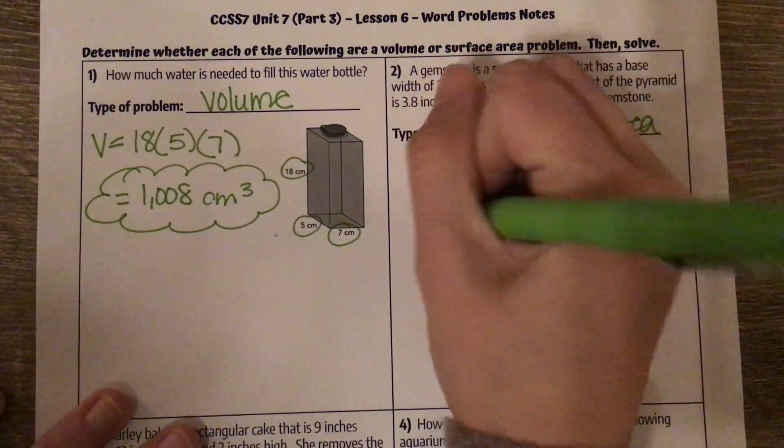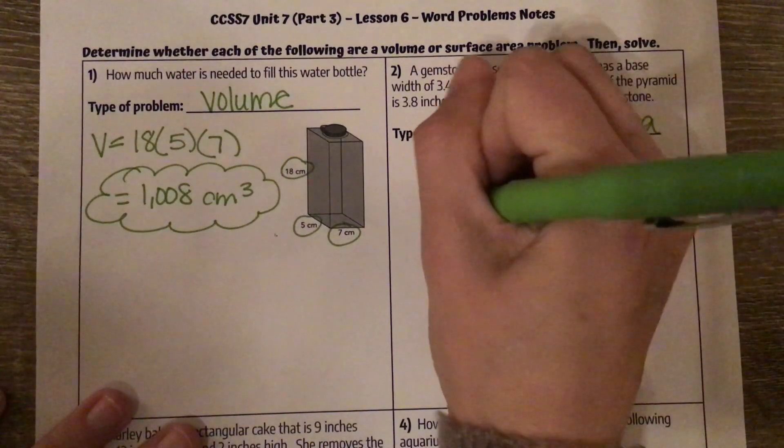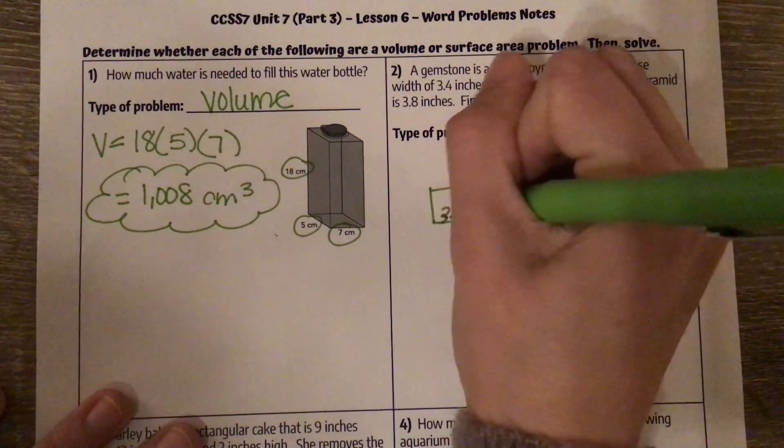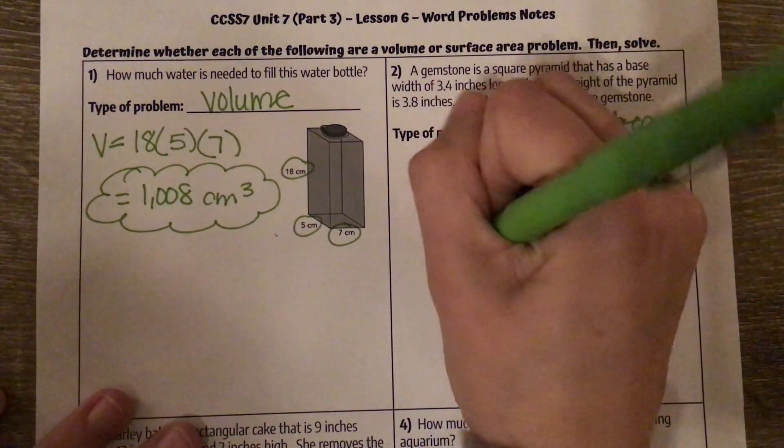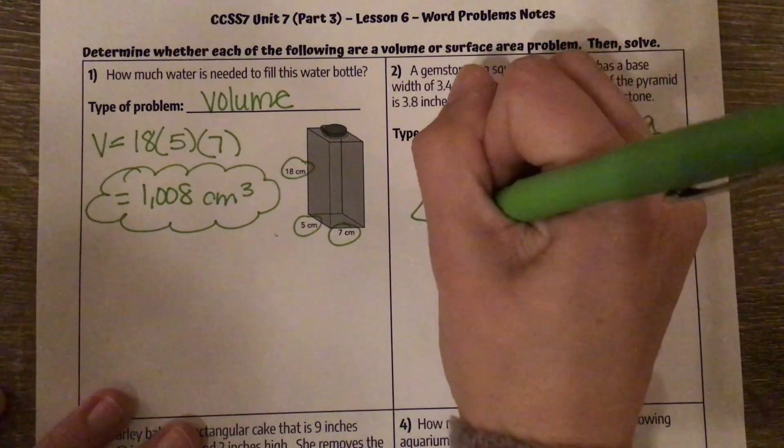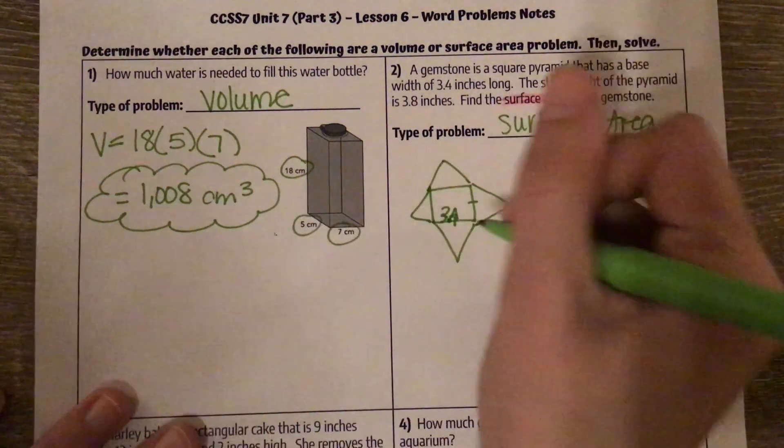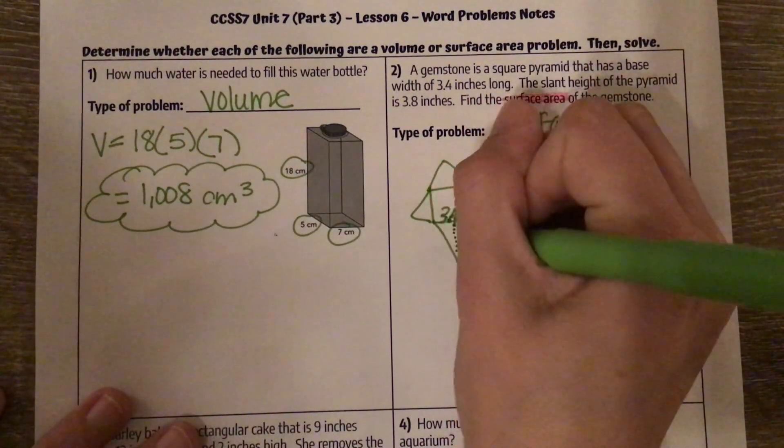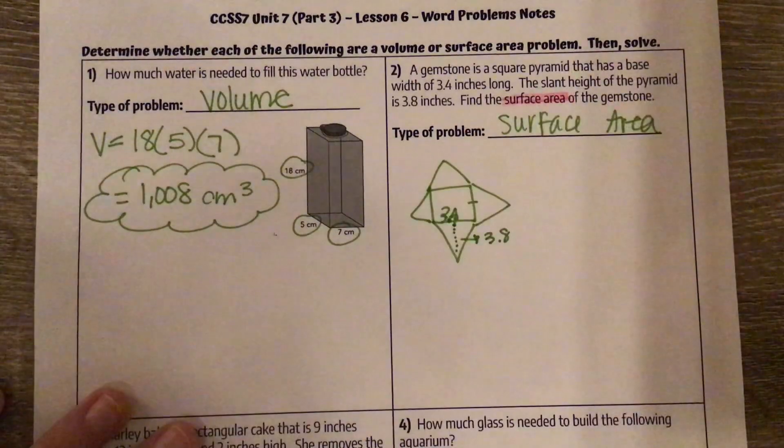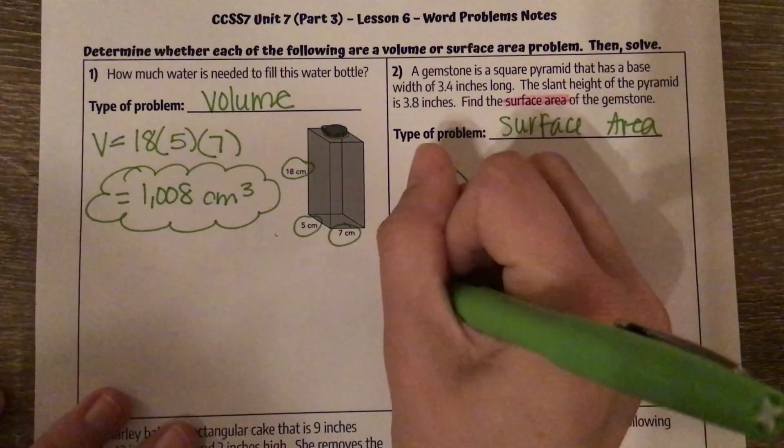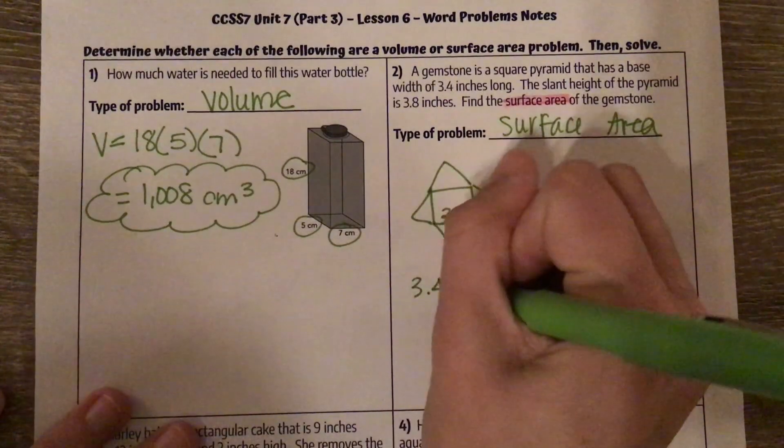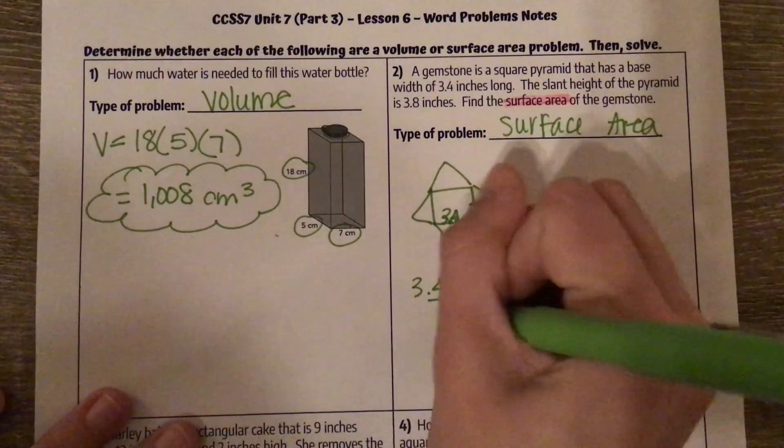We're talking about a pyramid, a square pyramid with side lengths 3.4 that is congruent. And then it has a slant height of 3.8 inches. So for my triangles, I'm doing my base of 3.4 times my height of 3.8 divided by 2.